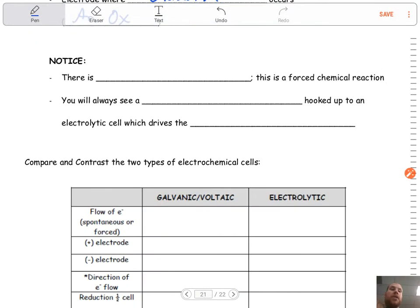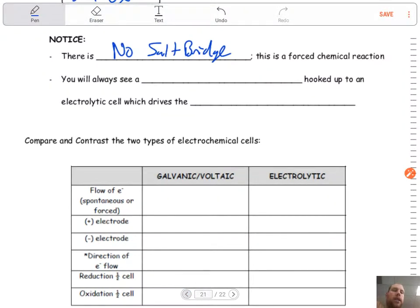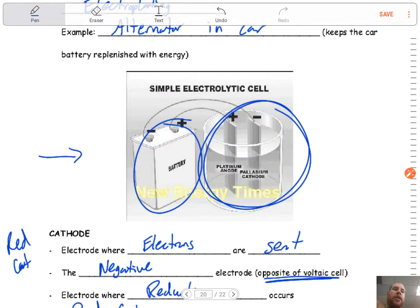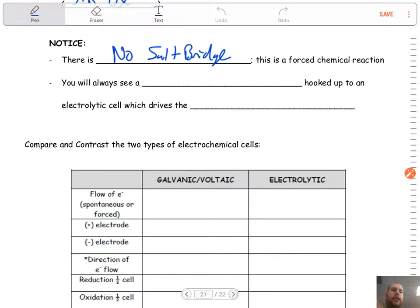Notice there's also no salt bridge. Guys, that salt bridge indicates that, hey, there's two different containers for each half cell. Here, notice, look at the picture that I gave you, they're all in the same cell. They're right next to each other. So this is one cell because there's no salt bridge.